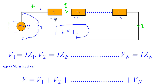The applied voltage V is divided among the impedances Z1, Z2, up to Zn. The voltage across Z1 is V1, across Z2 is V2, and so on up to Vn. In each impedance, current enters from one side — that side is positive — and exits from the other side, which is negative. This polarity applies consistently to Z1, Z2, and Zn.